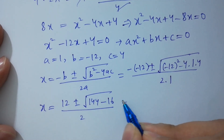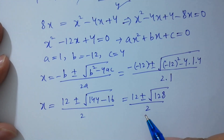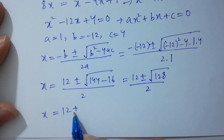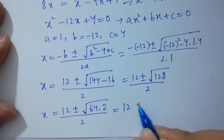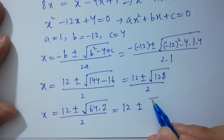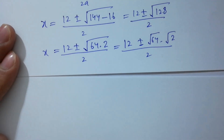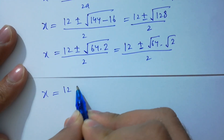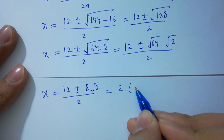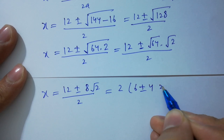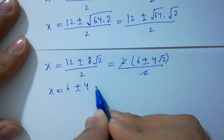We have x equals 12 plus or minus square root of 144 minus 16, over 2, which is 12 plus or minus square root of 128 over 2. Since square root of 128 equals 8 square root of 2, we get x equals (12 plus or minus 8 square root of 2) over 2, and the 2s cancel giving x equals 6 plus or minus 4 square root of 2.